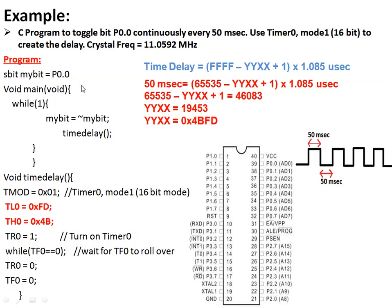A practical example: toggle bit port 0.0 continuously every 50 milliseconds. We need to use the timer for generating this 50 ms time delay. With a crystal frequency of 11.0592 MHz, each tick is 1.085 microseconds. The calculated initial value to load in TH and TL registers is 0x4BFD.